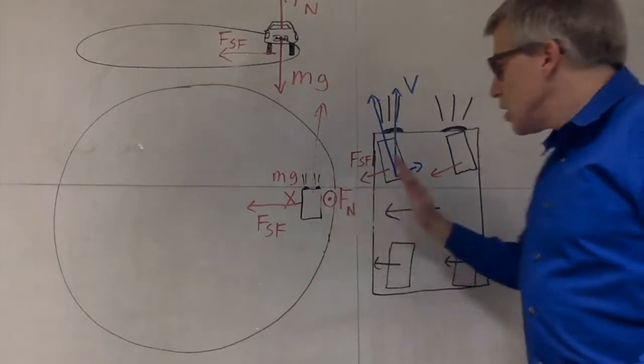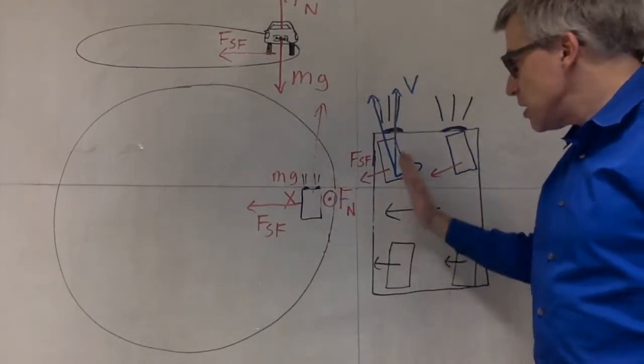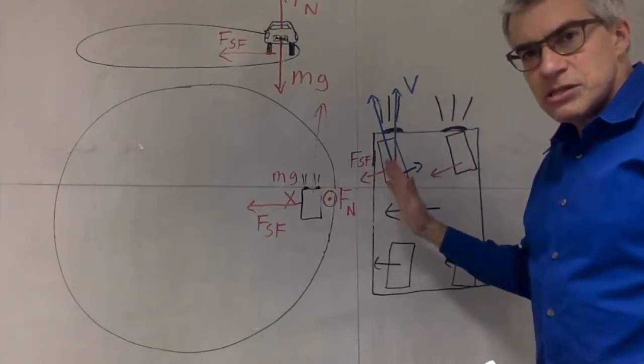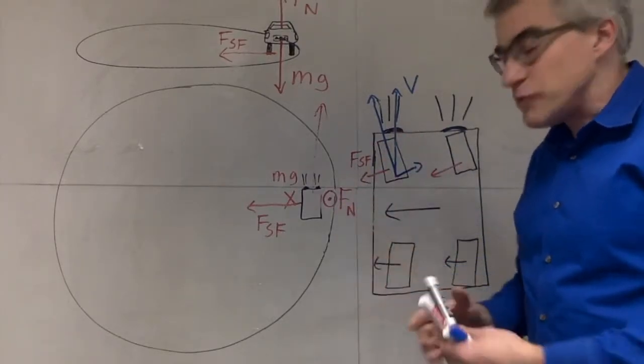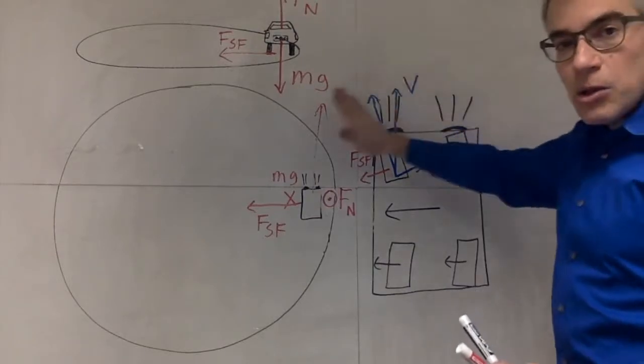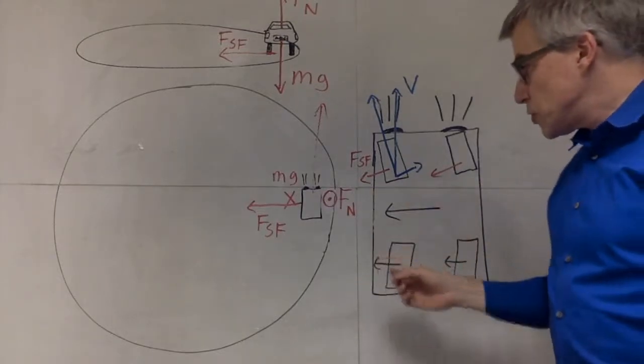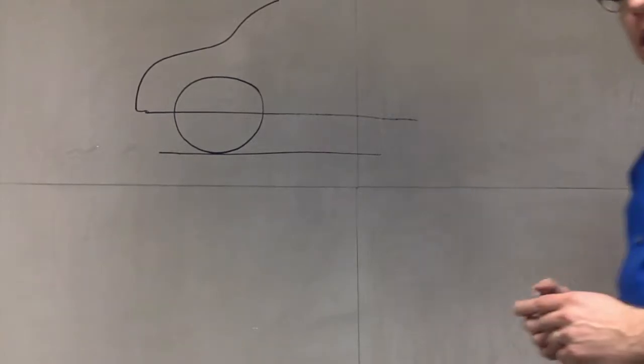This is the gist of it. The tires roll that way very easily and there's no resistance. Trying to scrape them sideways, huge resistance. So that's what this force of static friction is preventing. It's preventing the relative motion of the tire scraping that way along the pavement as part of its motion like that. That is how static friction can cause the car to turn sideways.